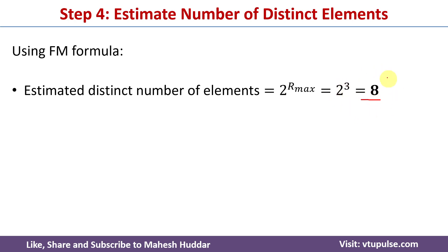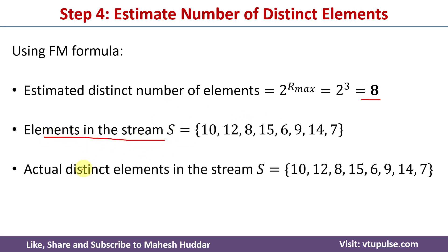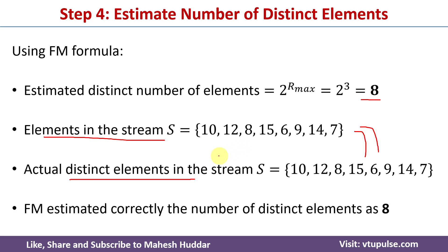This means that in the stream we have 8 distinct elements. This is the given stream and this is the distinct element count. The Flajolet-Martin algorithm correctly identifies the distinct elements as 8.